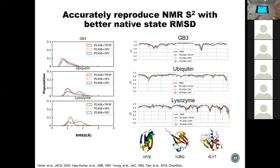We also tested on NMR order parameters for globular proteins like GB3, ubiquitin, and lysozyme. The order parameters show very good agreement regardless of which force field is used — even 14SB-OPC is reasonable in this test, which is why there have been many great studies using 14SB-TIP3P. Looking at the RMSD histogram, 19SB is actually more stable than 14SB. Even though 19SB slightly overestimates helicity in the propensity plot, it's more stable in terms of protein structure. This was run for only 200 nanoseconds because we don't need to run longer than the tumbling time for order parameters.